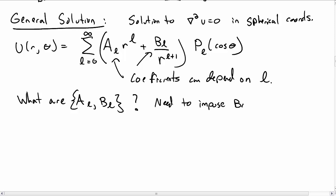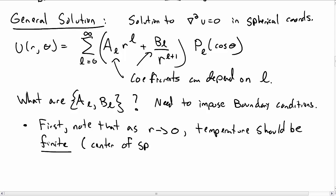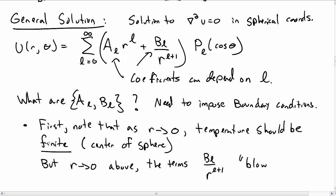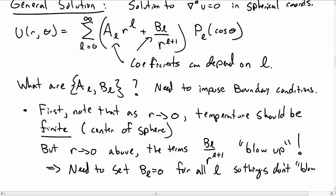What we need to do is impose our boundary conditions on the boundary of our sphere in order to figure these things out. First, note that as r goes to zero, the temperature of the ball shouldn't go crazy — it should just be something finite. It turns out that requiring the temperature at the center of the sphere not to blow up is really important. If we look at the general solution, the terms that look like b_l over r^(l+1) are going to blow up as r goes to zero. These are bad terms — they would cause the temperature to blow up at the center. So we need to set all the b_l's equal to zero for all l, in order for the temperature to be finite and not blow up at the center.